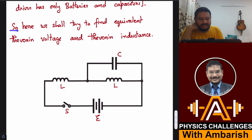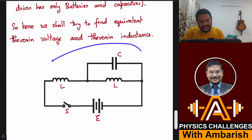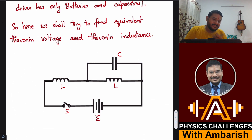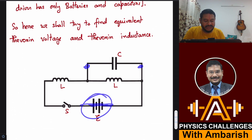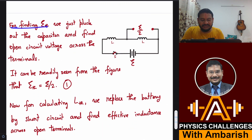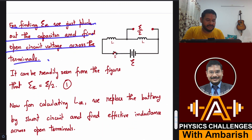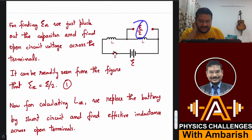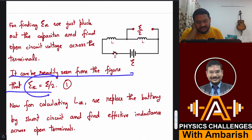Here we shall find the equivalent Thevenin voltage and Thevenin inductance. For finding E Thevenin, we pluck out the capacitor and find the open circuit voltage across those two terminals. With the capacitor removed, the two inductors L are simply in series, so the potential drop across one is E/2. Thus E Thevenin = E/2.